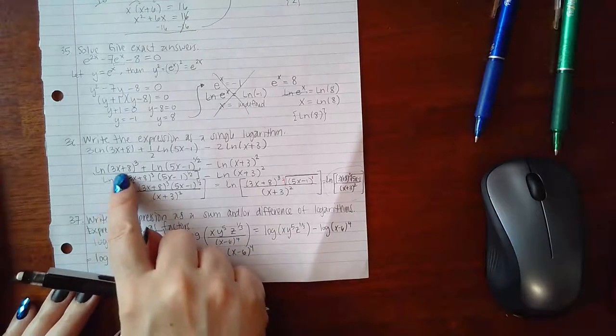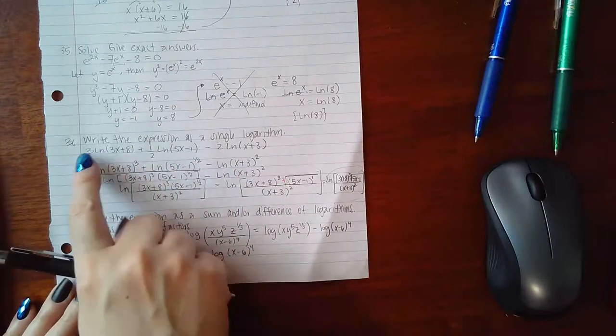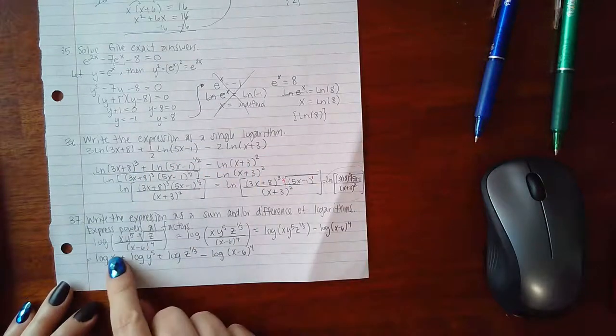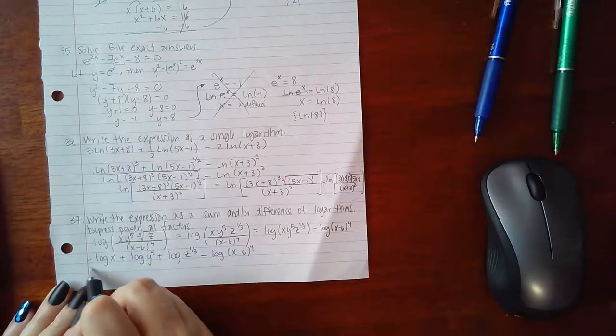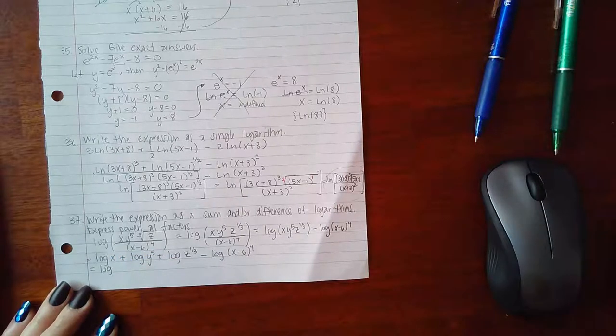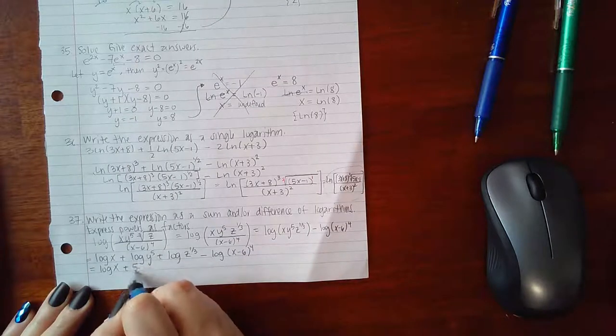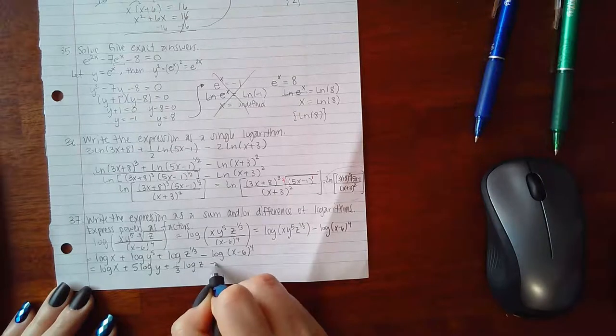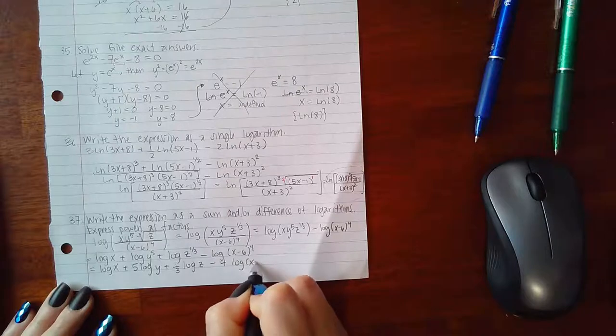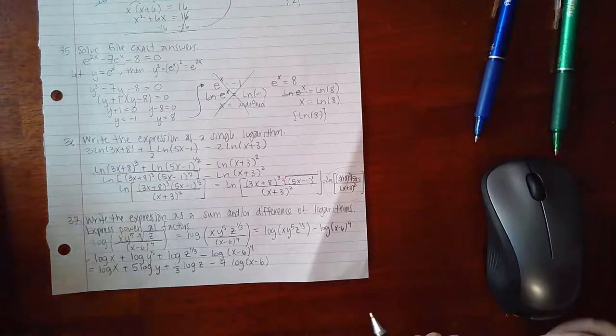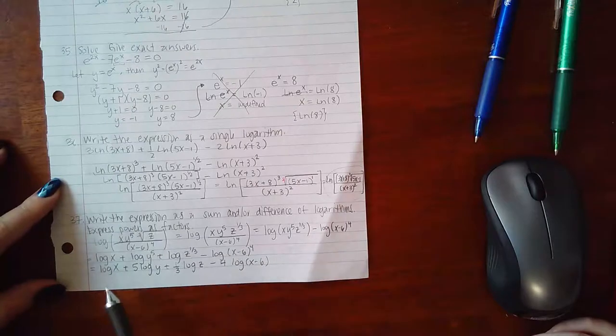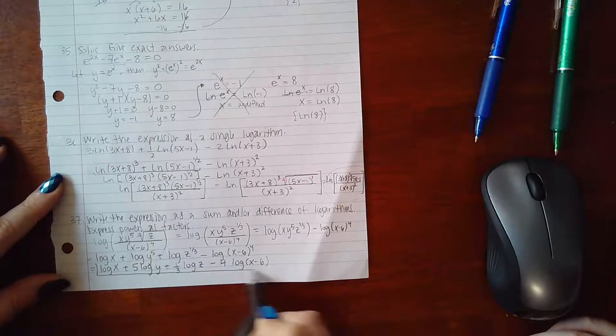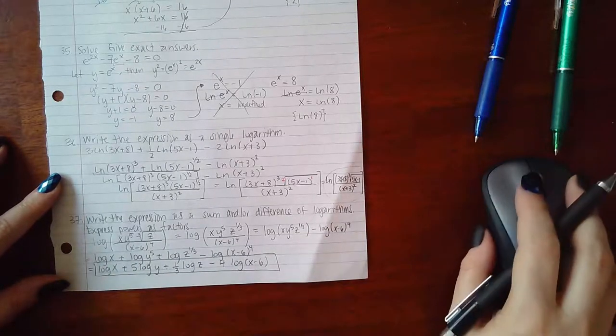The last thing we need to do is, before we started putting them together, notice that we took the exponents and brought them to the front. Now what we need to do is the opposite. If we have exponents, we need to bring them down as coefficients. We're going to have log x plus 5 log y plus one third log z minus 4 log of (x minus 6). Now everything is a sum or difference of logarithms, there's no more fractions, no more products in our arguments, and all of our powers are now factors. This is going to be the final answer.